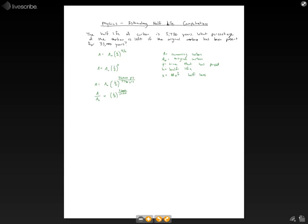Now, let's say you don't have a calculator and want to quickly estimate this. One way is to simplify 35,000 over 5,730. When you look at that, it's obviously less than 7, because 35,000 divided by 5,000 is 7.